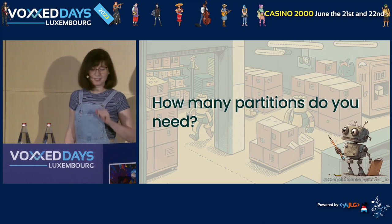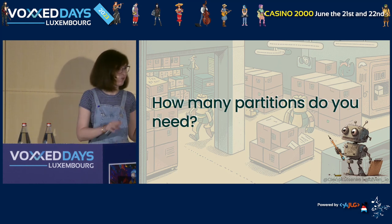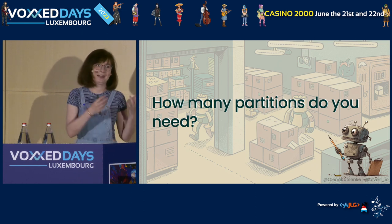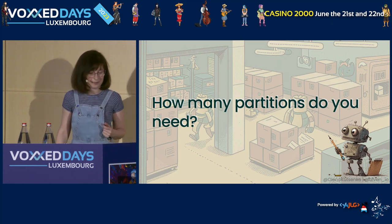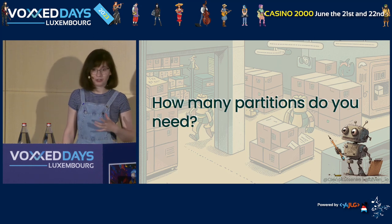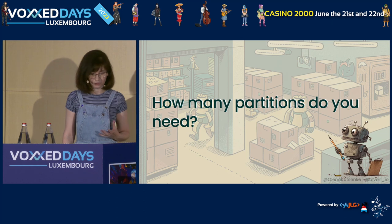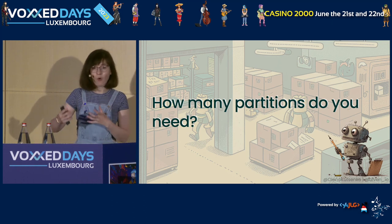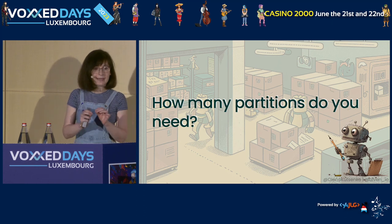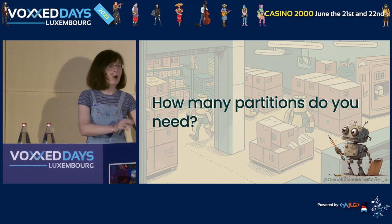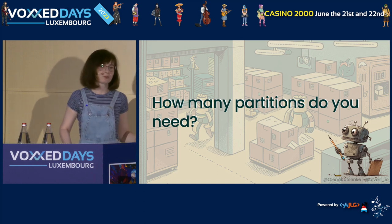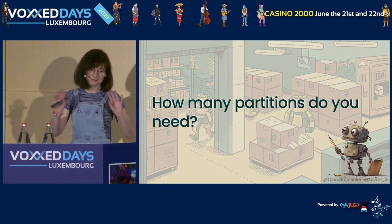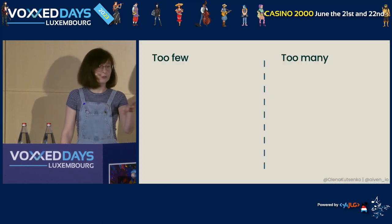Keeping these metrics in mind, let's start with the question: how many partitions do you actually need for your topic? When you create a topic, you are trying to avoid answering that question. It is important to carefully determine the optimal number of partitions for your topic based on information that you have about your data and your usage — you need to find your own number. Let's look at the extremes: having too few partitions and having too many.